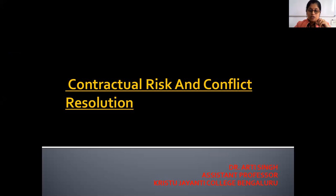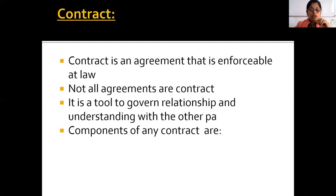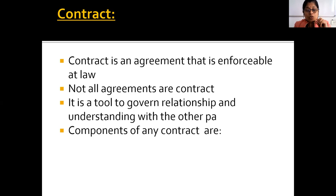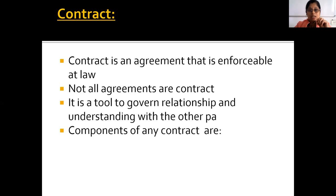So what we should understand first: what is a contract? A contract is legally enforceable — that is, foreseeable at law — and not all agreements can be a contract. A contract governs relationships between the partners, because contracts are first between the partners. All contracts can be enforceable, but not all agreements can be a contract, as it shows and governs a clear relationship between the two parties.